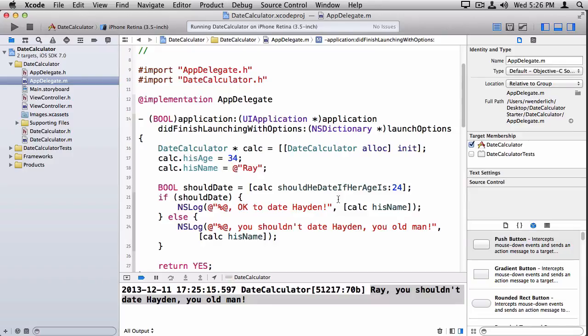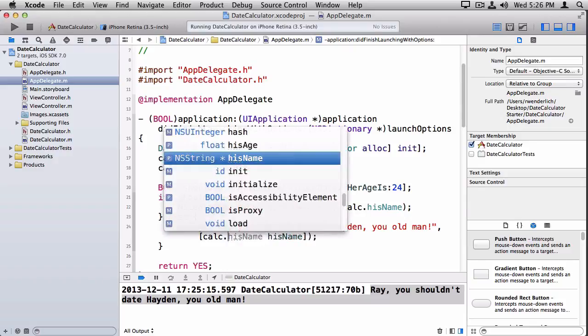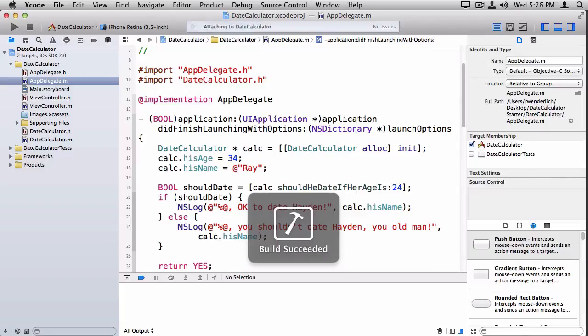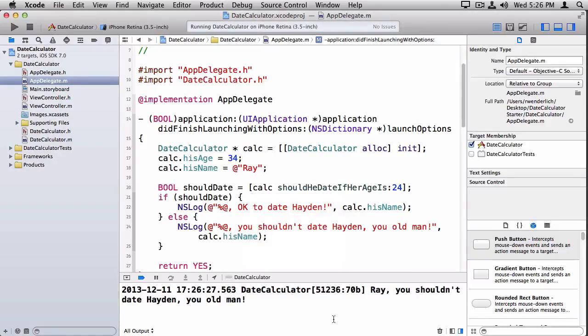And finally, down here, instead of the getters, I can also use dot notation. Calc dot his name is the equivalent of calling the calc his name. And I run it and the app works fine just as before.